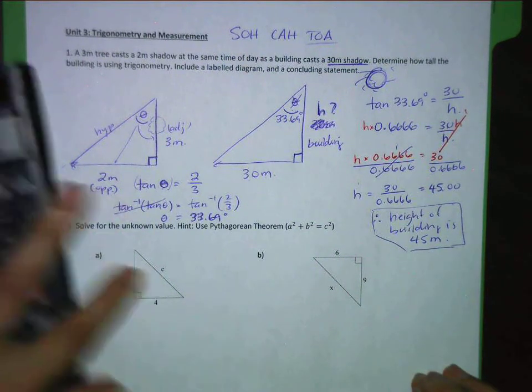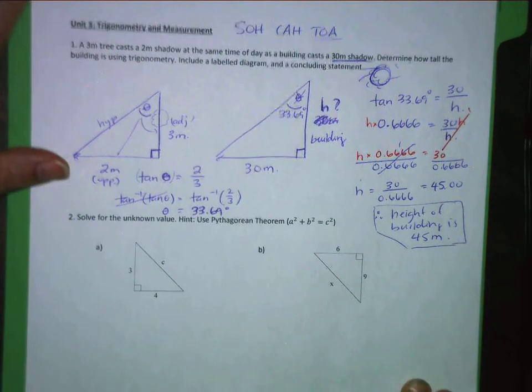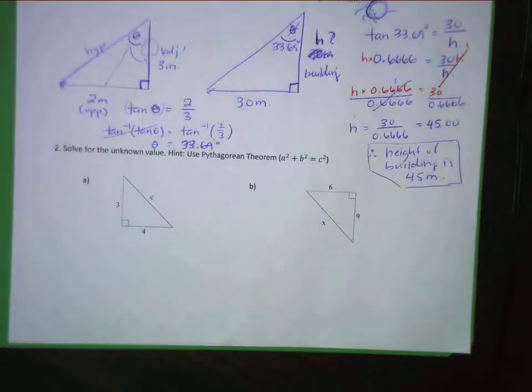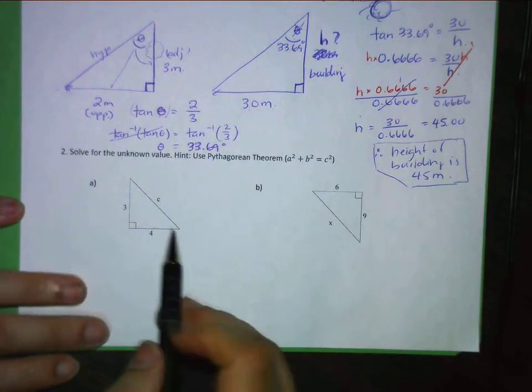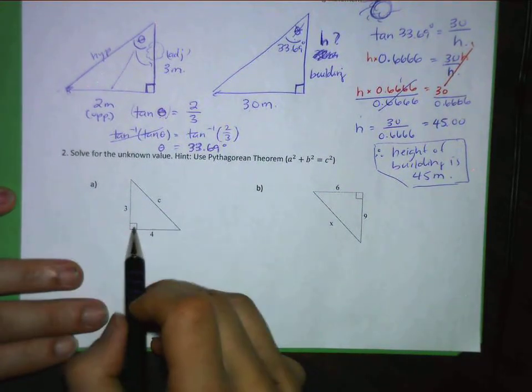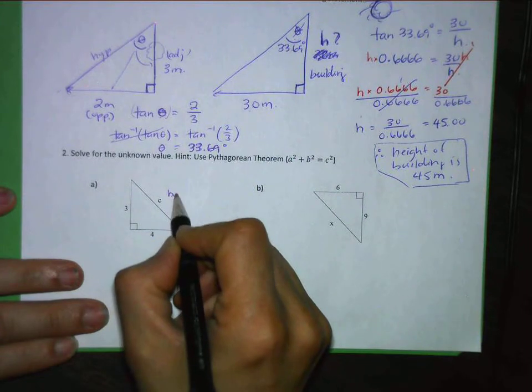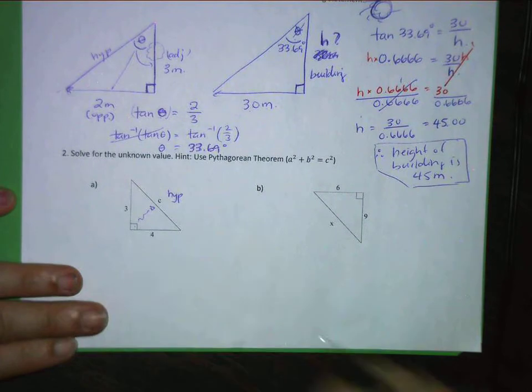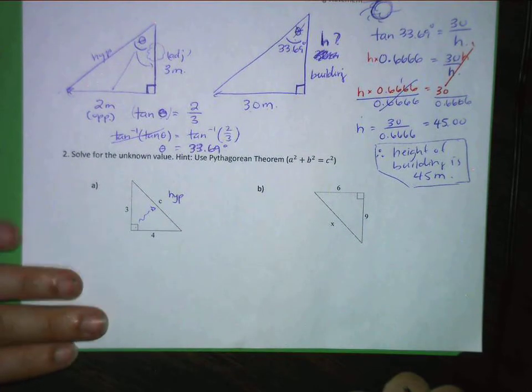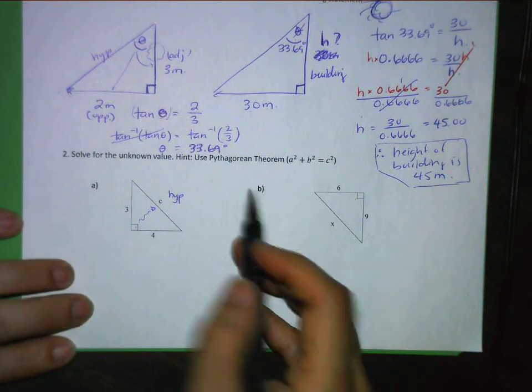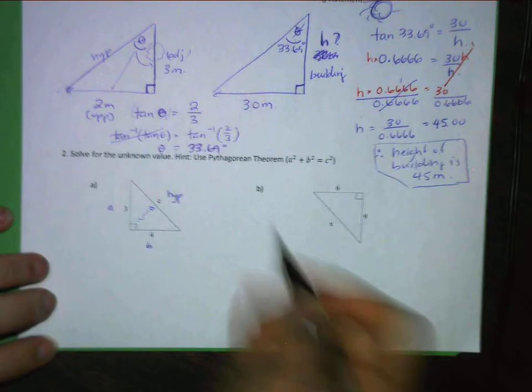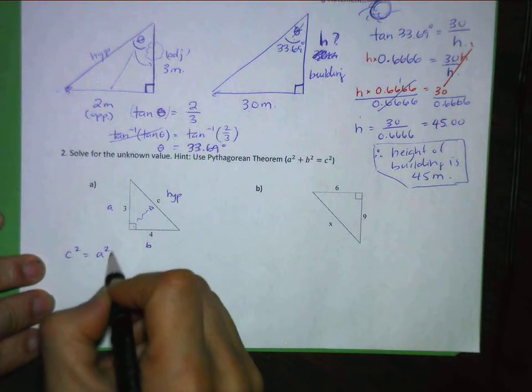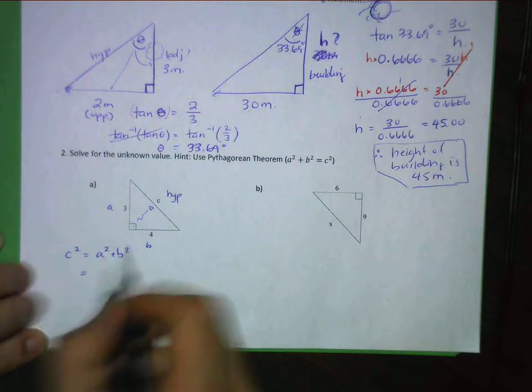Alright. So we'll go on to a little bit of Pythagorean theorem. So we have to be able to identify the hypotenuse. This is the hypotenuse. It's always across from the 90 degree angle. So this could be A and this could be B. We write down the formula. C squared equals A squared plus B squared. I fill that in. A is 3.